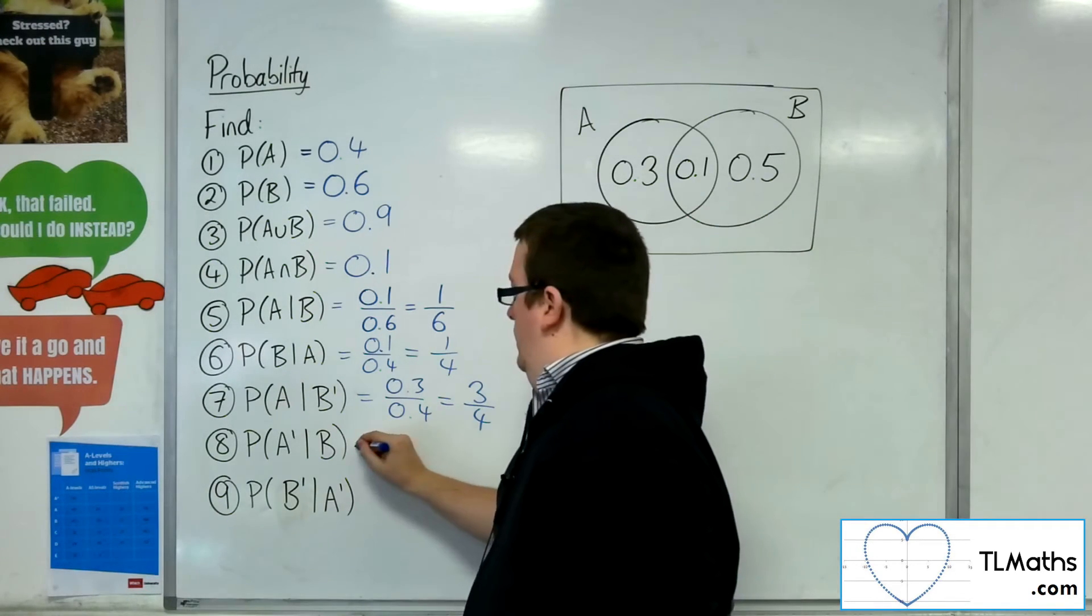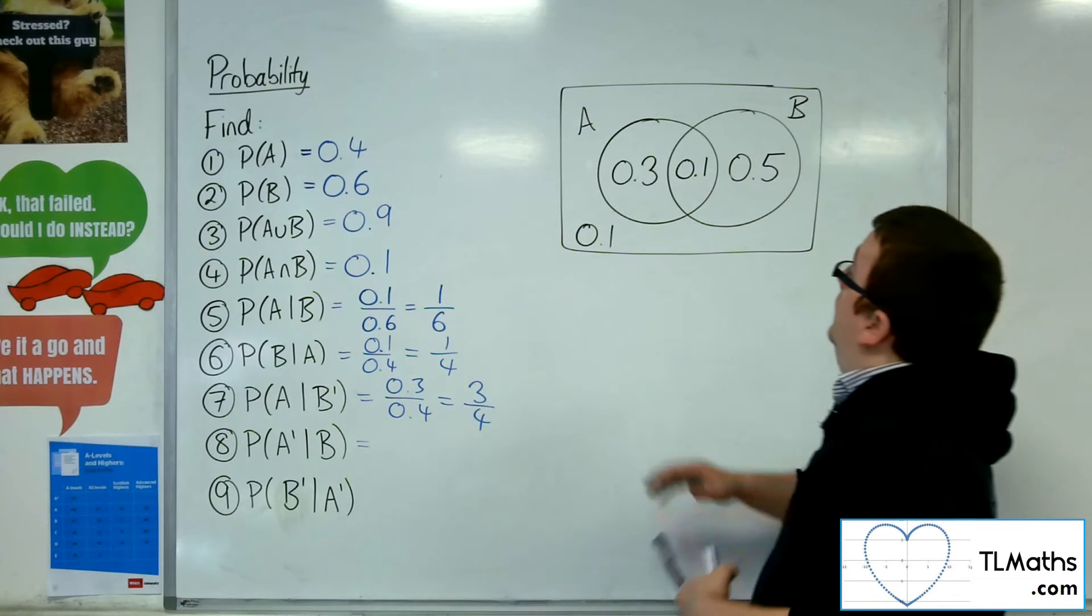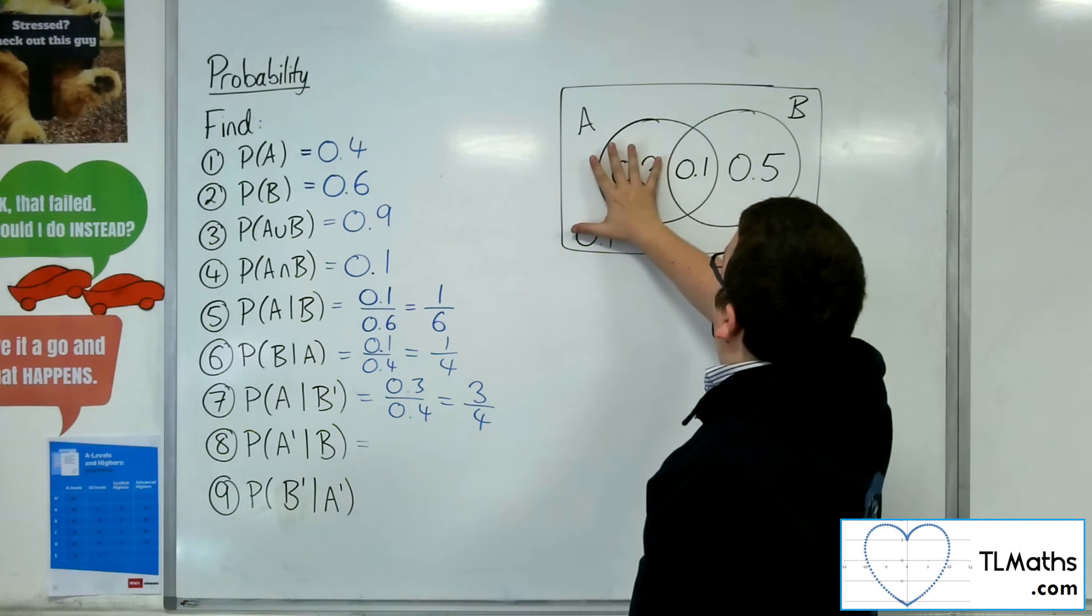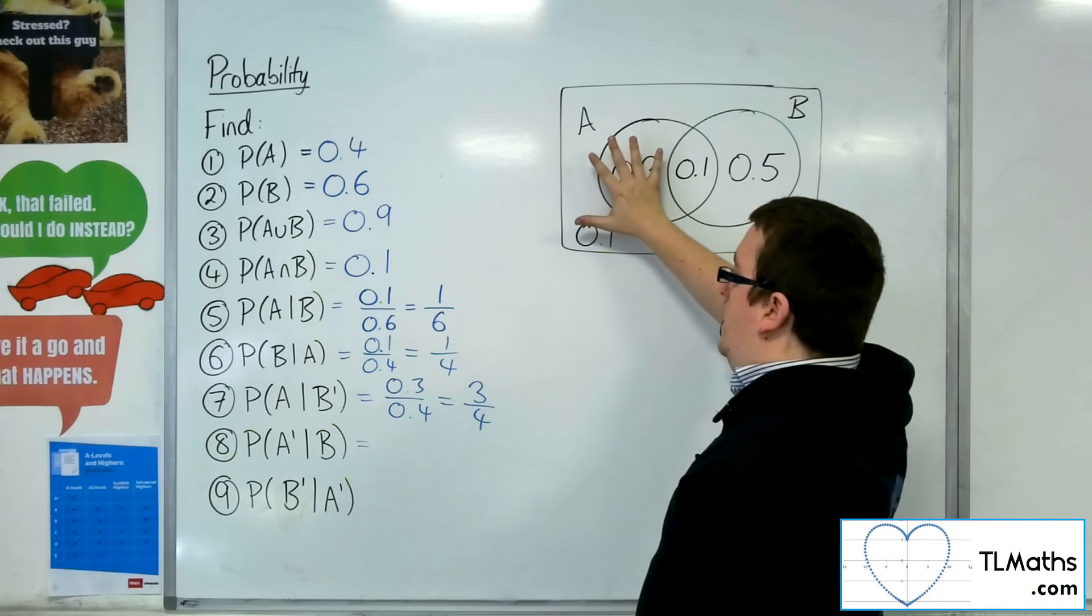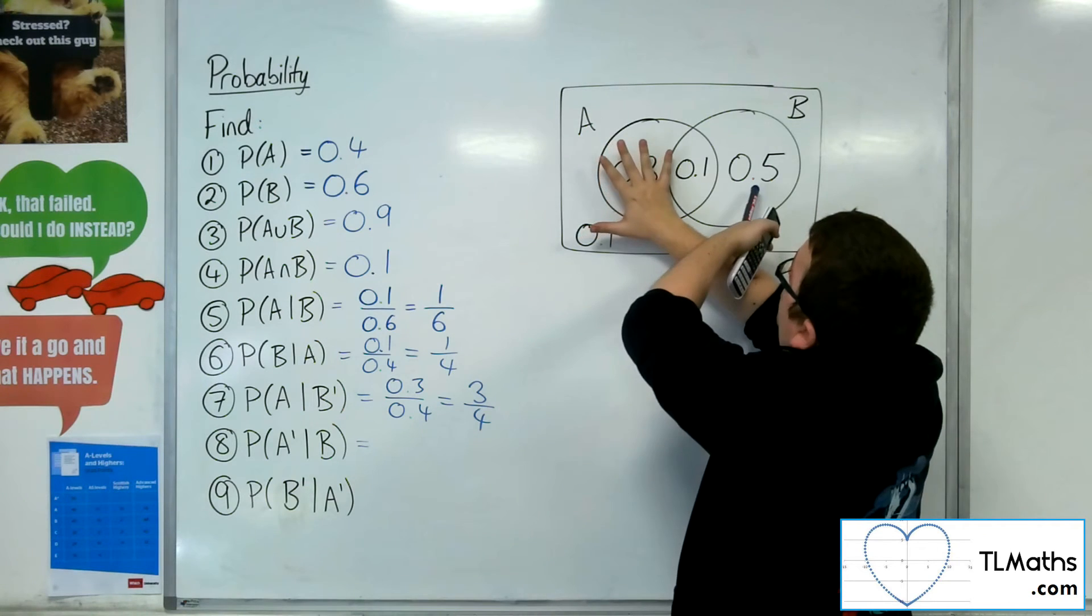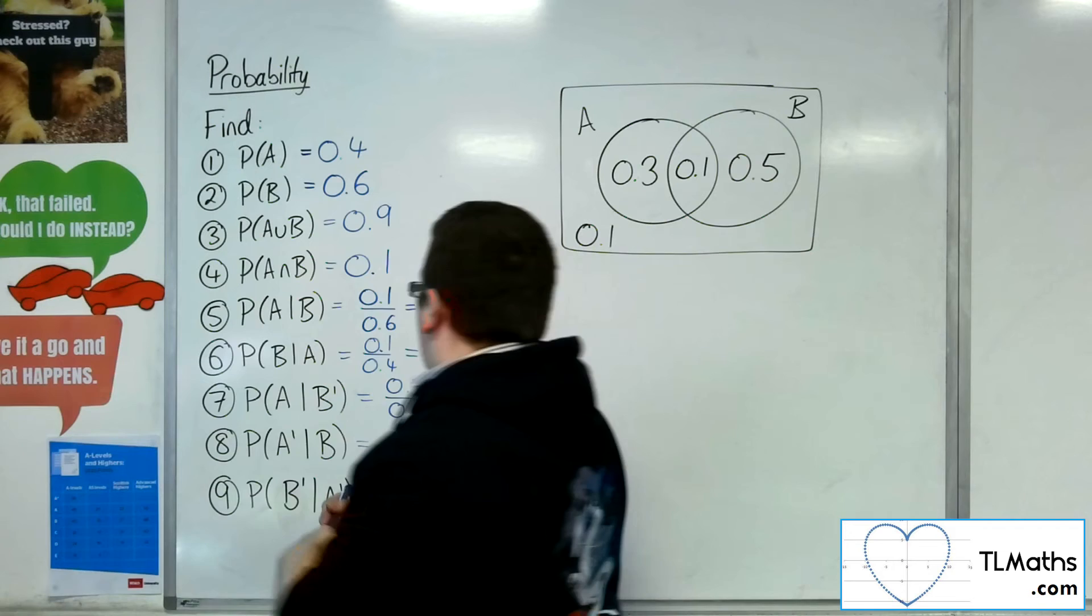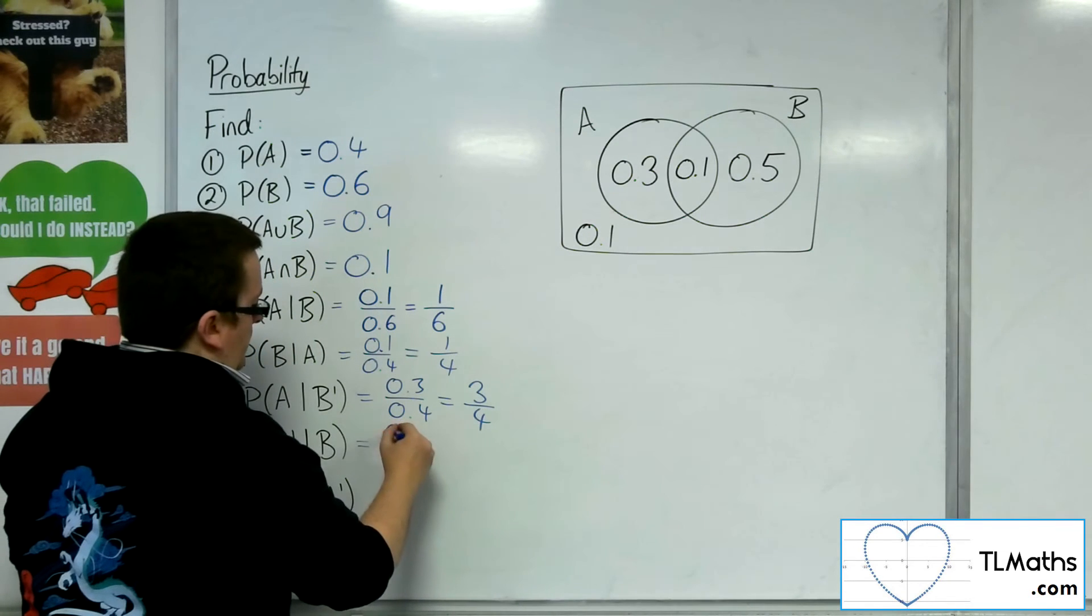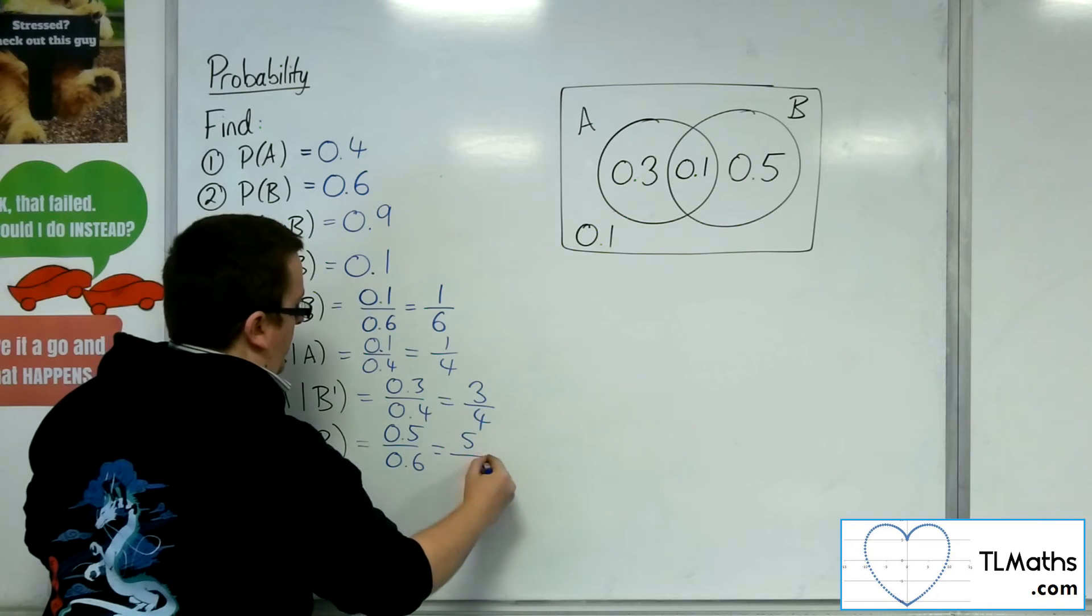Right, the probability of not A given B. So the probability of not A given B, so we know that it's B. What's the probability of not A? Well, it's the 0.5 out of what you see. So it's 0.5 over 0.6, which is five sixths.